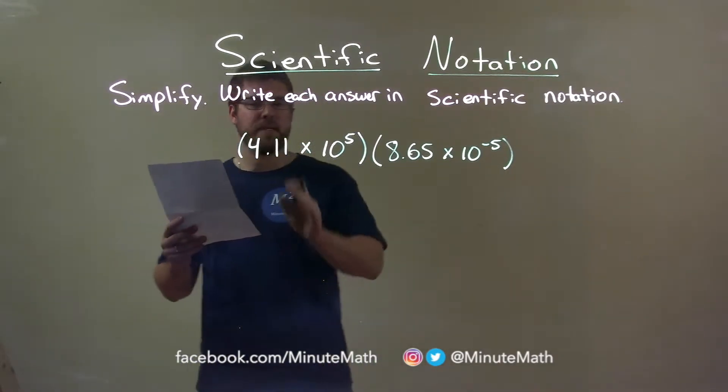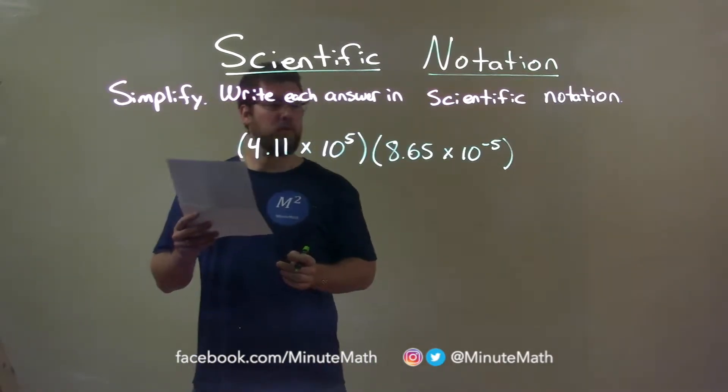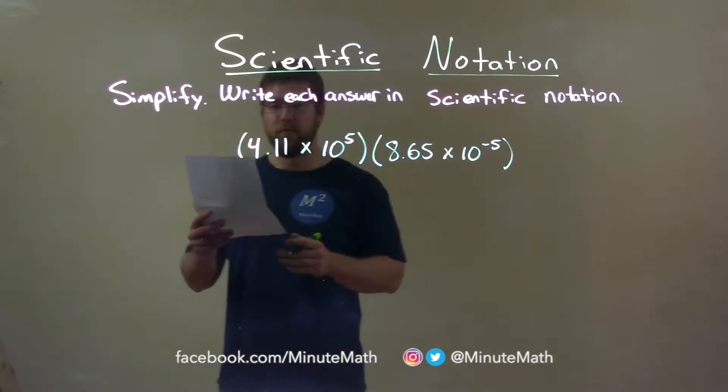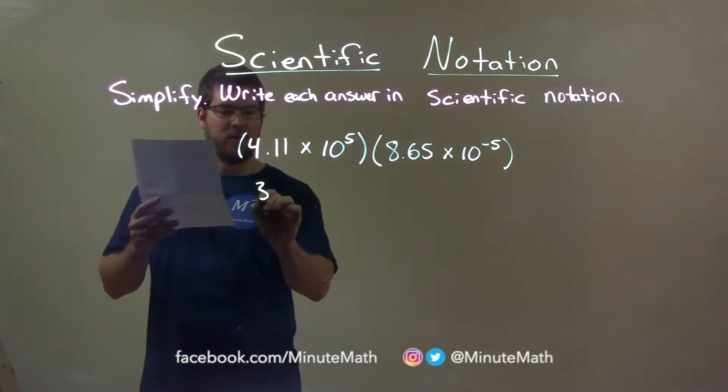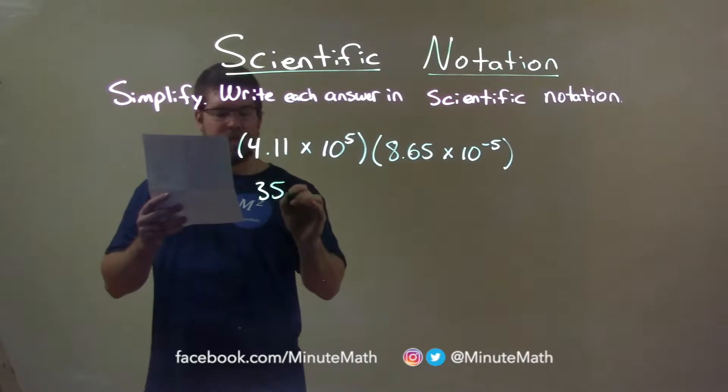First thing I want to do is take the 4.11 and multiply it by the 8.65. That gives me 35.5515.